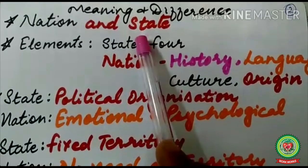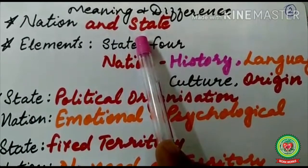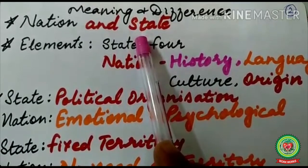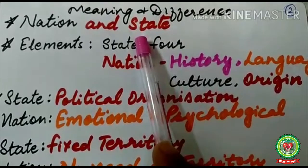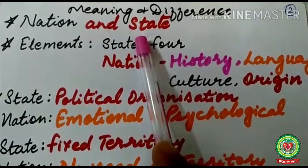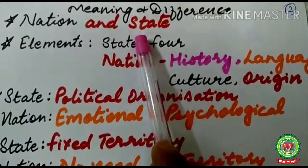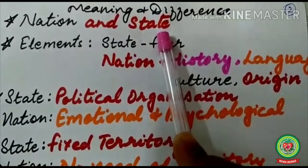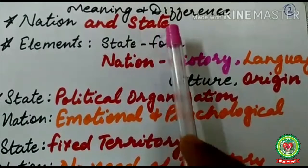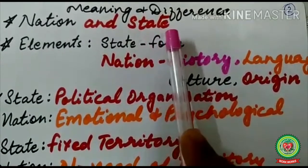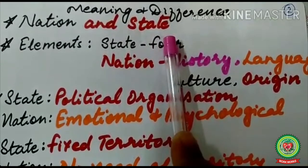The term 'state' has already been discussed in detail. The state has four elements: population, territory, government, and sovereignty. I have already discussed both terms with you, but today I will focus on the difference between state and nation.